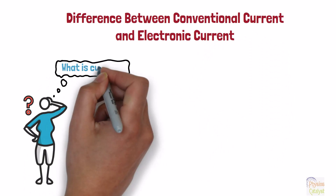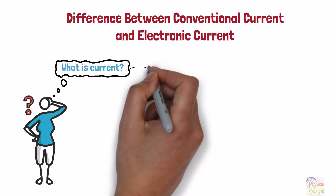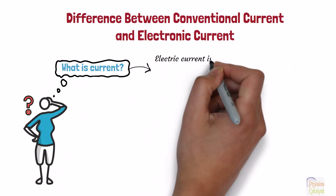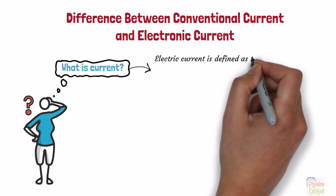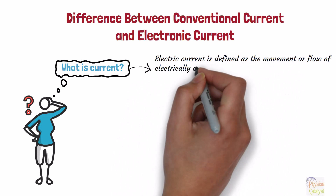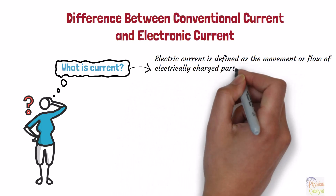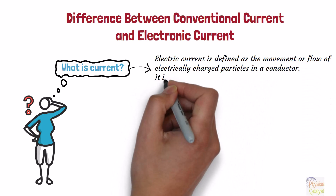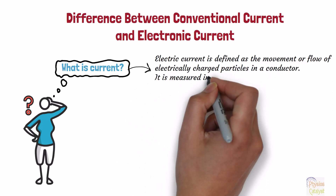What is current? Electric current is defined as the movement or flow of electrically charged particles in a conductor. It is measured in amperes, which is its SI unit.